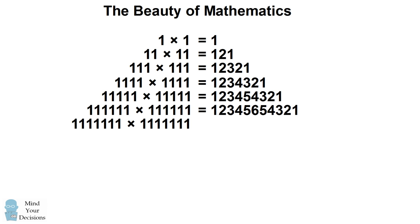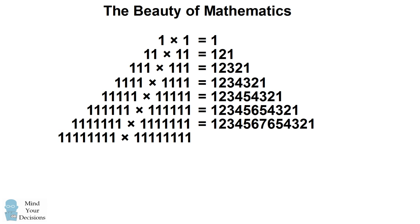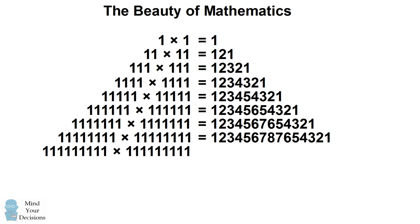This pattern will continue. For example, if you want to multiply a number which has nine 1's by itself, you would count up 1, 2, 3, 4, 5, 6, 7, 8, 9, and then you would count back down: 8, 7, 6, 5, 4, 3, 2, 1.